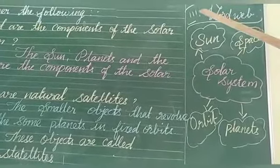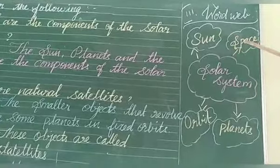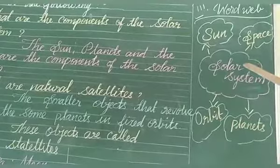See these words once more. Solar System: Sun, Space, Orbit, Planets are in the Solar System.